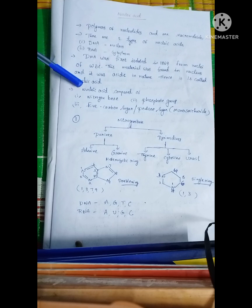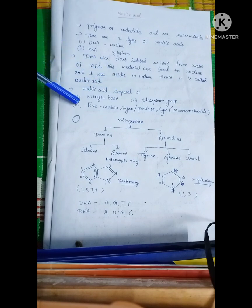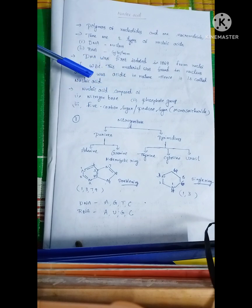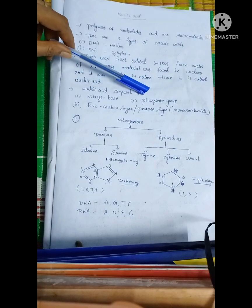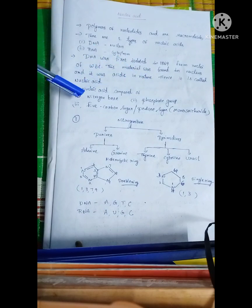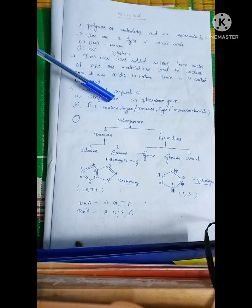In nucleic acids, there are three components: nitrogen base, phosphate group, and 5-carbon sugar. These are the three important components in nucleic acids.